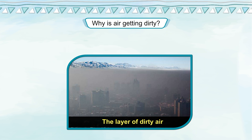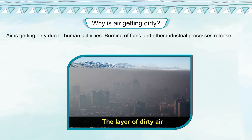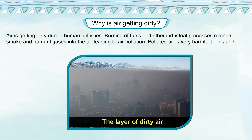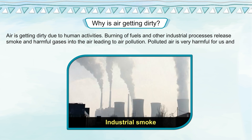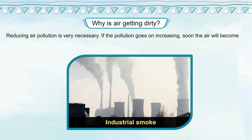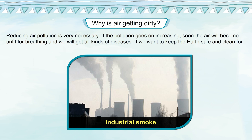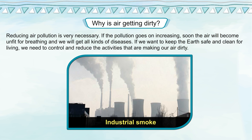Why is air getting dirty? Air is getting dirty due to human activities. Burning of fuels and other industrial processes release smoke and harmful gases into the air, leading to air pollution. Polluted air is very harmful for us and breathing it can harm the lungs. Reducing air pollution is very necessary. If pollution goes on increasing, the air will become unfit for breathing and we will get all kinds of diseases. If we want to keep the earth safe and clean, we need to control and reduce the activities that are making our air dirty.